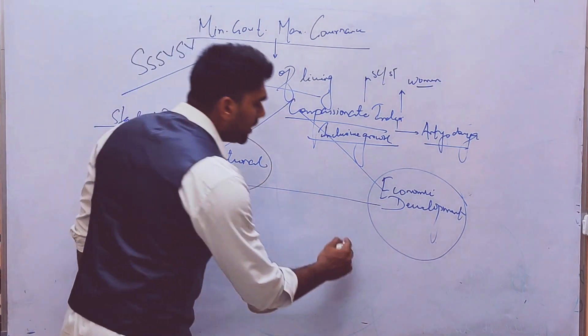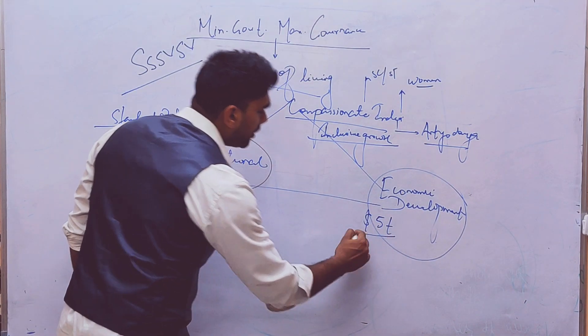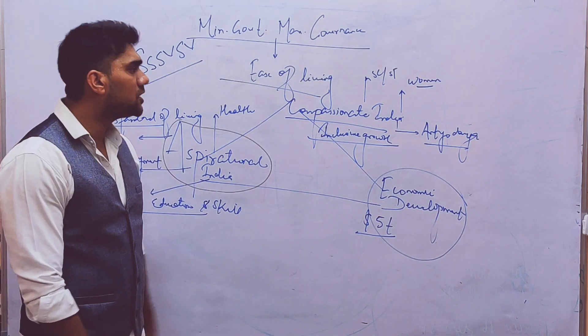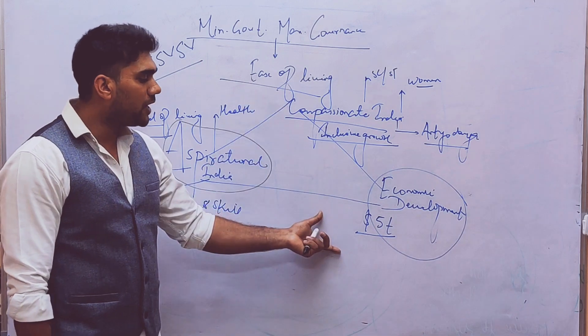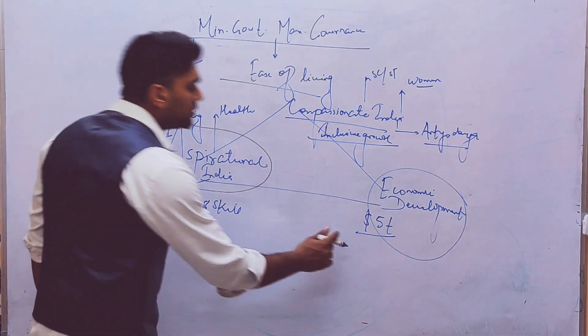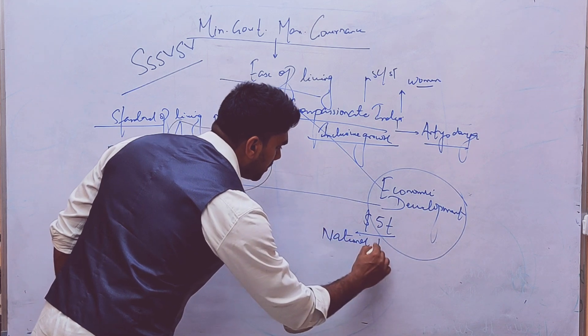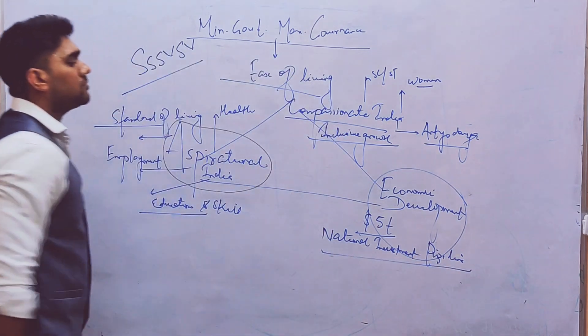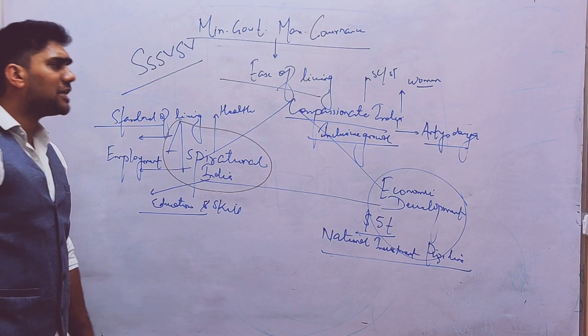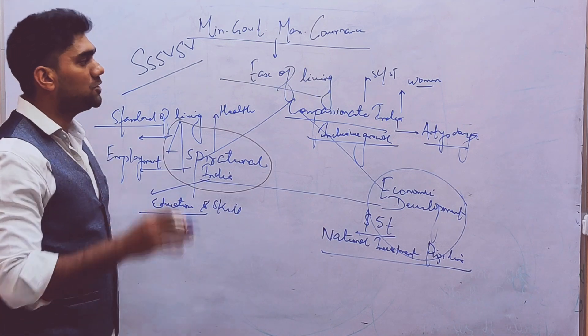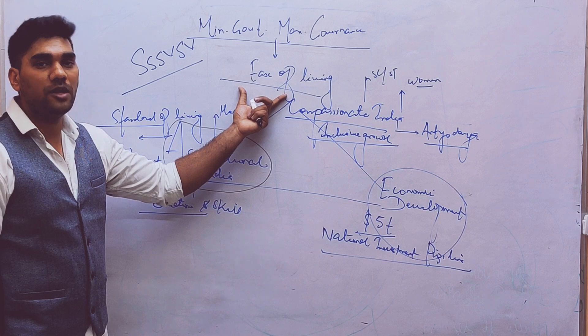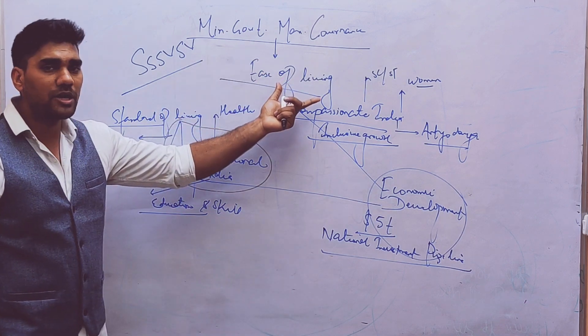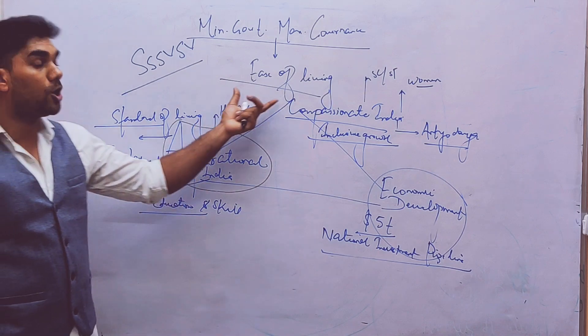Economic development is necessary and here you might remember the term which I keep on discussing - 5 trillion economy. The 5 trillion economy status can be a method towards achieving the objective of ease of living. So that is why for the 5 trillion objective the policy is National Investment Pipeline. So these are the broad pillars of the current budget 2020 and 2021 where the objective of ease of living with the slogan of Sabka Saath Sabka Vikaas Sabka Vishwaas or minimum government maximum governance is going to achieve three important parameters.